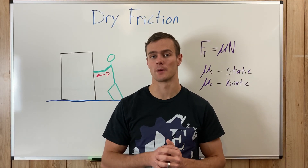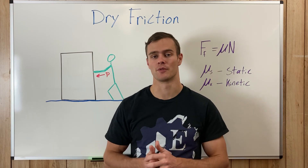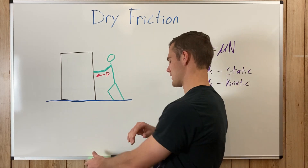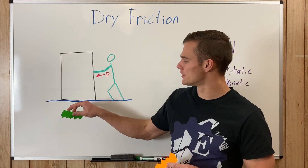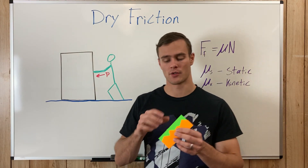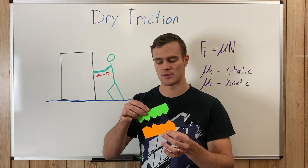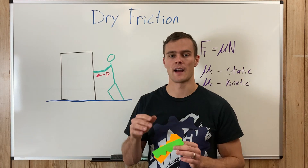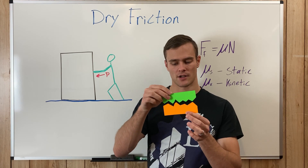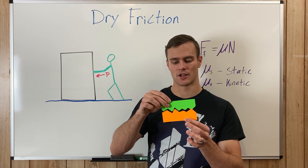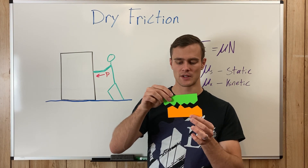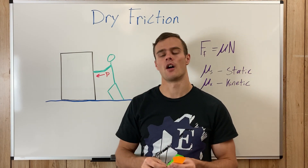Friction is a force that resists movement when two objects are in contact and trying to move. Say we have a man pushing a heavy box. If we zoom into a microscopic perspective of the contact points between the box and the ground — demonstrated here with two index cards — those surfaces aren't completely flat. They're irregular with jags, and to slide past each other, one surface has to be pushed up and over these ridges.